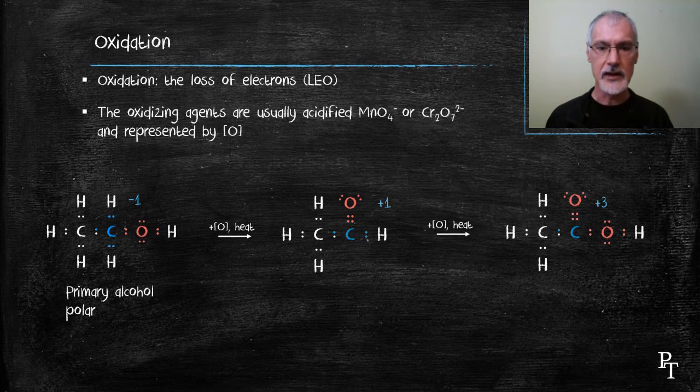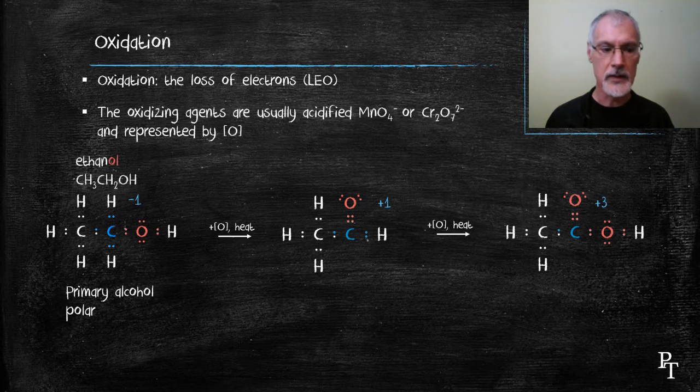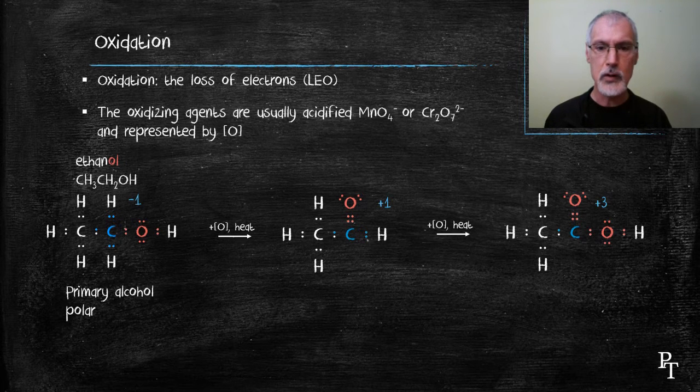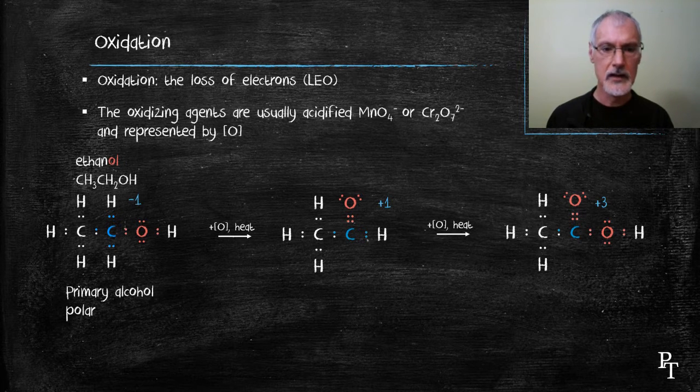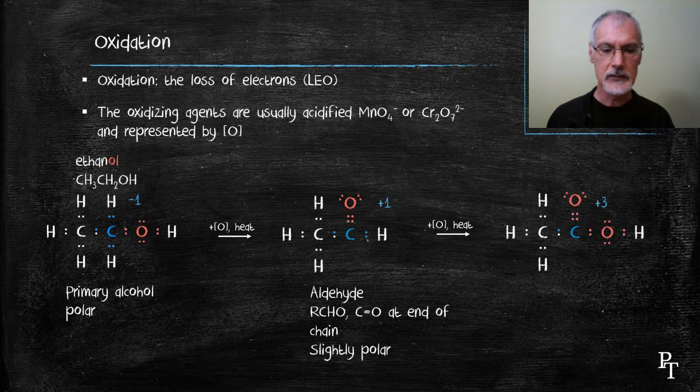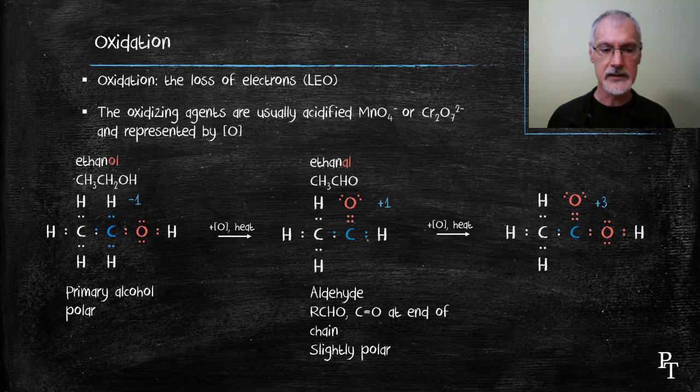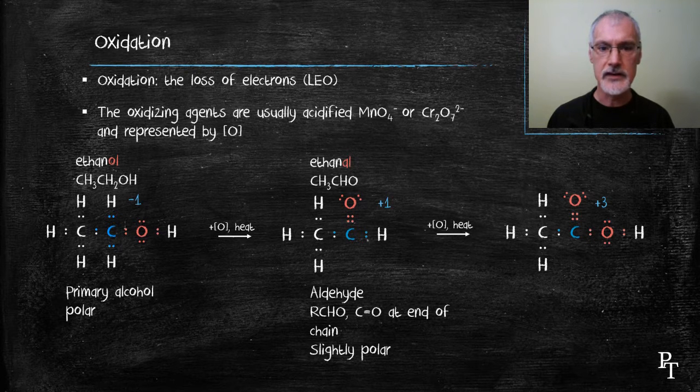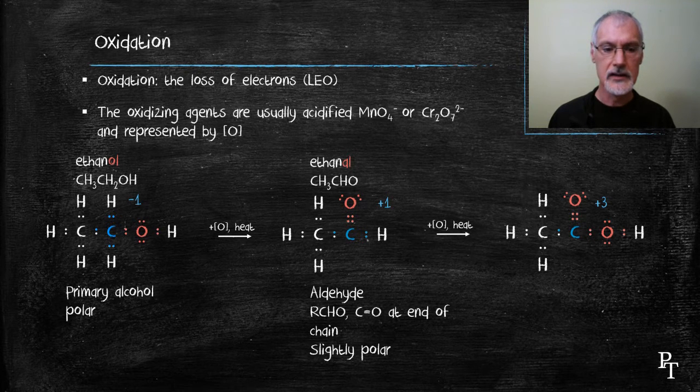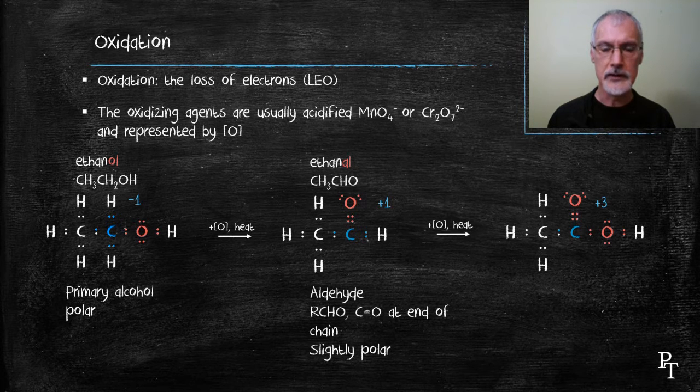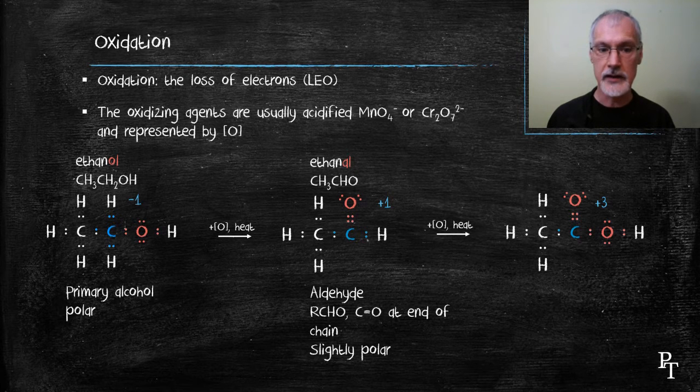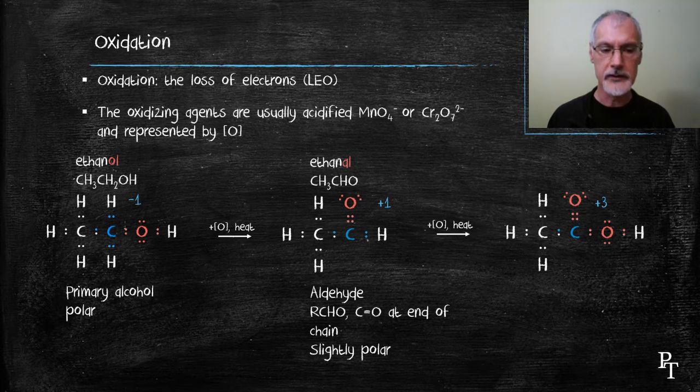So first of all, I'm going to begin with a two-carbon chain called ethanol, my primary alcohol, and it's a very polar molecule. Through the process of oxidation, it will produce a compound that's called an aldehyde. I recognize aldehydes by a double-bonded oxygen at the end of the carbon chain. These molecules are slightly polar and can form dipole-dipole bonds with each other, not quite as polar as the alcohols.